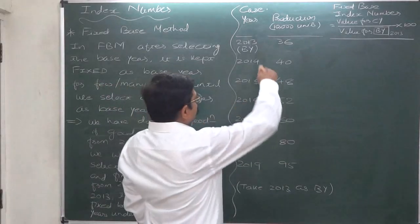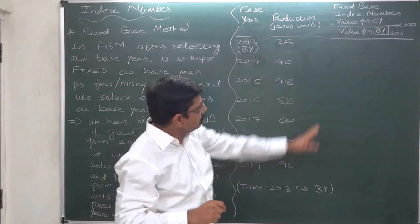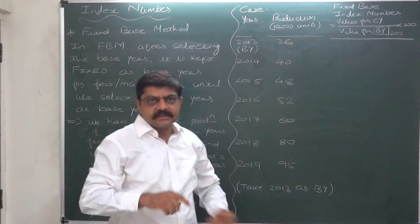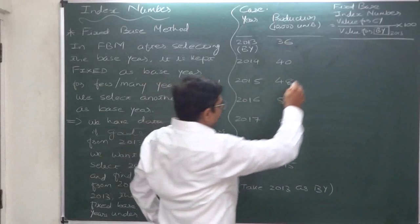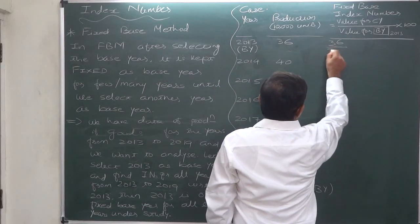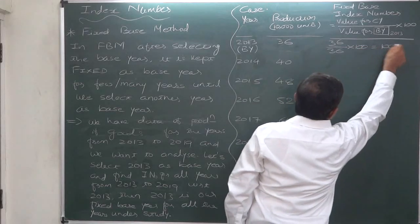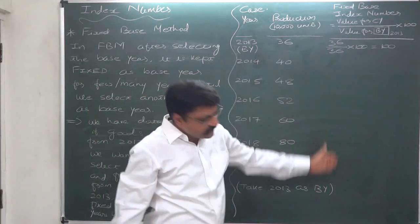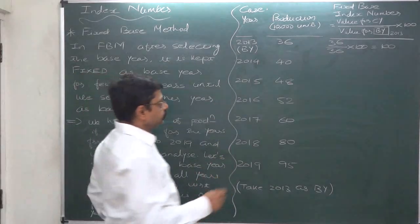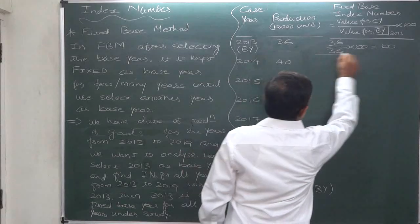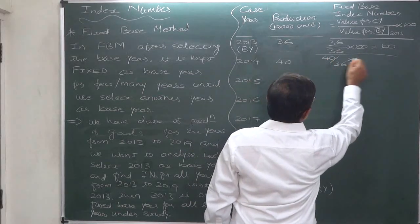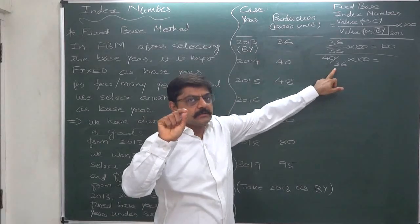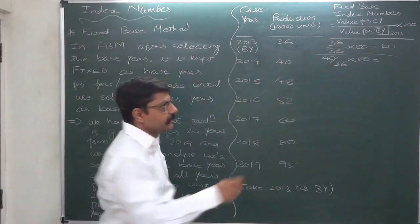Here, 2013 is our fixed base, which means in all cases the denominator will be the value for 2013, that is 36. All values will be divided by 36 and multiplied by 100. The index number for the base year itself always remains 100. For the year 2014, it is 40 divided by 36, multiplied by 100, which comes to 111.11.